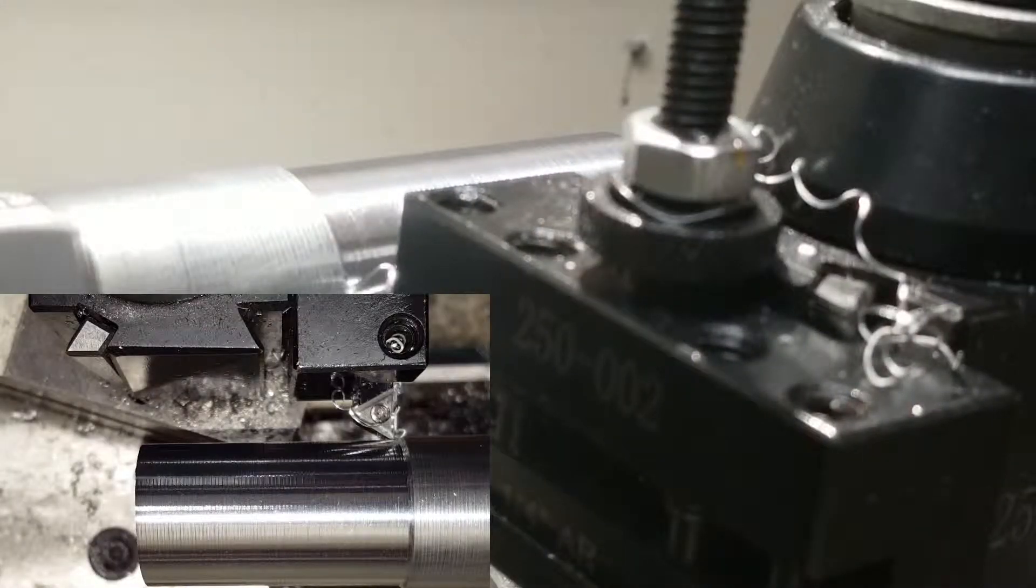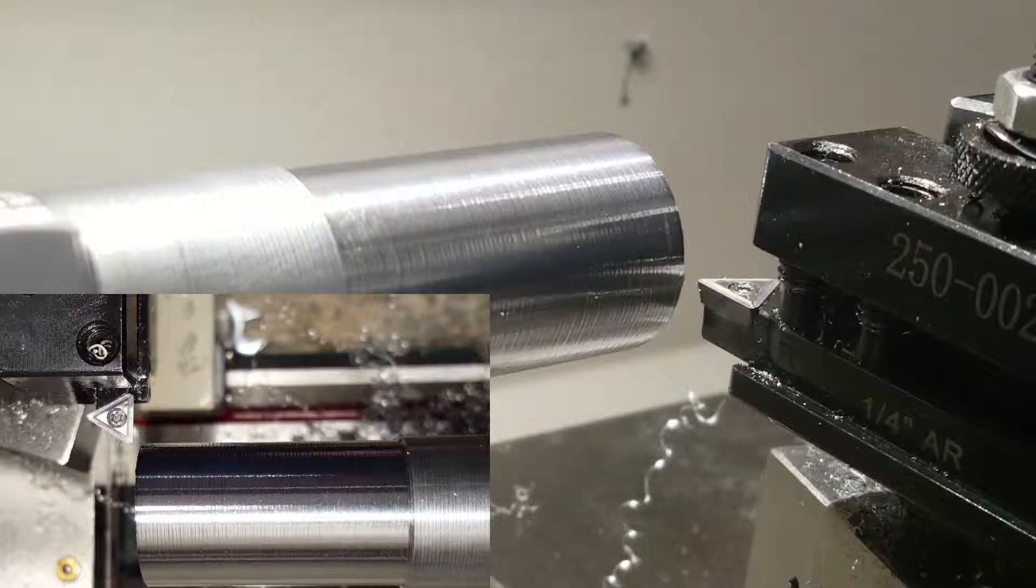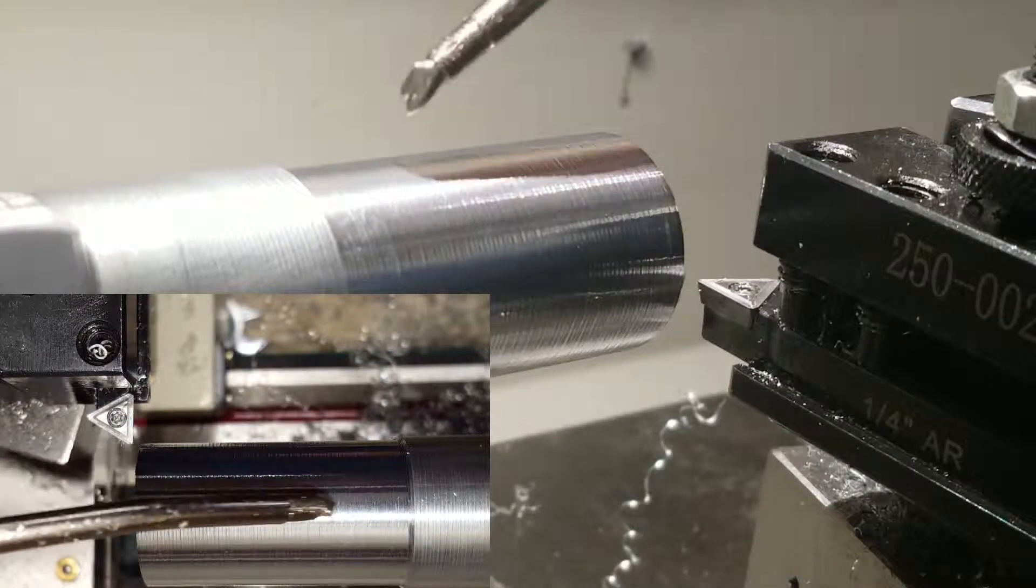Now that I have finished my pass, I am not going to touch the cross slide. I'm just going to move the carriage over to the right and apply lubrication for the second test run.